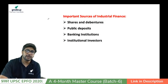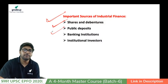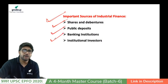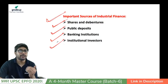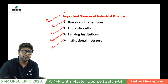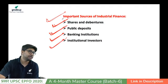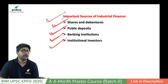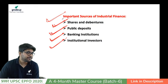Important sources of industrial finance in India include shares and debentures, public deposits, banking institutions, and institutional investors — including foreign institutional investors. Companies can enter the share market and issue shares, or offer debenture instruments for a fixed period, paying a certain fixed amount to the debenture holder.